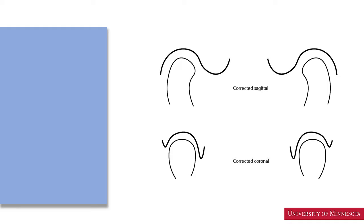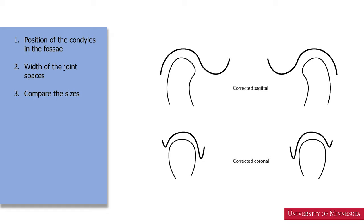At the midline of the condyle, we should identify the position of the condyle in the fossa. The distal position of the condylar head may suggest anterior disc displacement. We should also evaluate the width of the joint space and whether it is uniform. We should compare the sizes of the condyles to rule out hypoplasia or hyperplasia, and compare the overall shapes of the condyles, including the presence of an osteophyte.